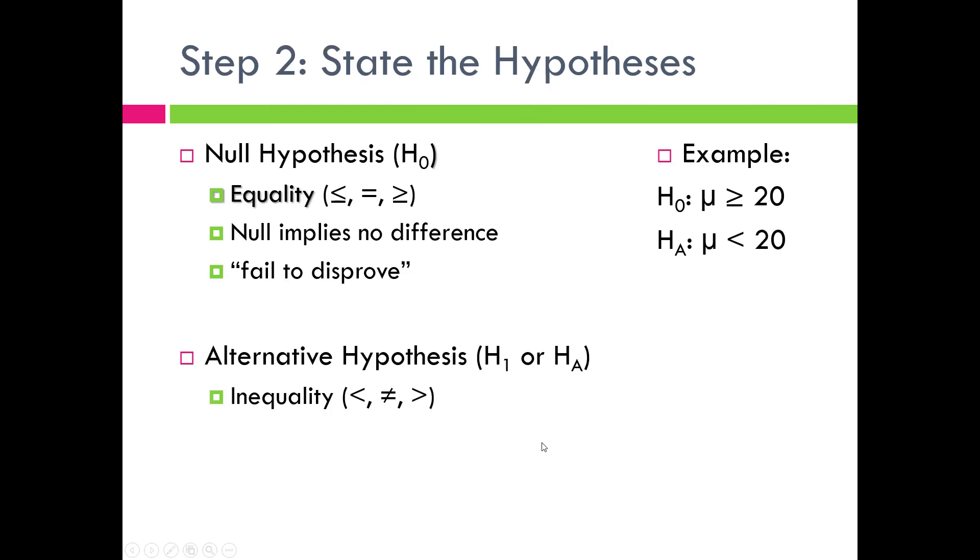The next thing that we'd move into is stating our null and our alternative hypothesis. The null hypothesis, which we typically denote H sub zero, is a statement that contains equality. It implies that there's really no difference between those two things. The alternative hypothesis is typically denoted H sub one or H sub A, and the alternative hypothesis is a statement that contains strict inequality. If you look at the right of the slide, you'll see I gave an example there.